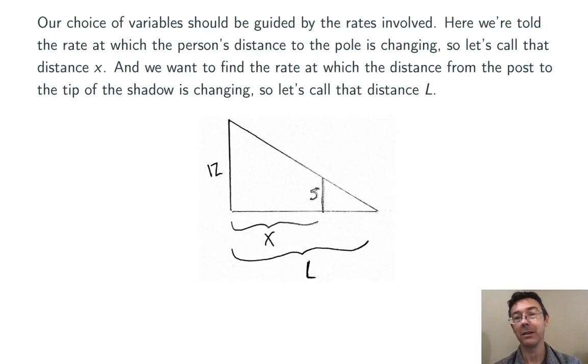Now I'm ready for that slightly better sketch, like so. X, the distance from the pole to the person, and L, the distance from the pole to the tip of the shadow.